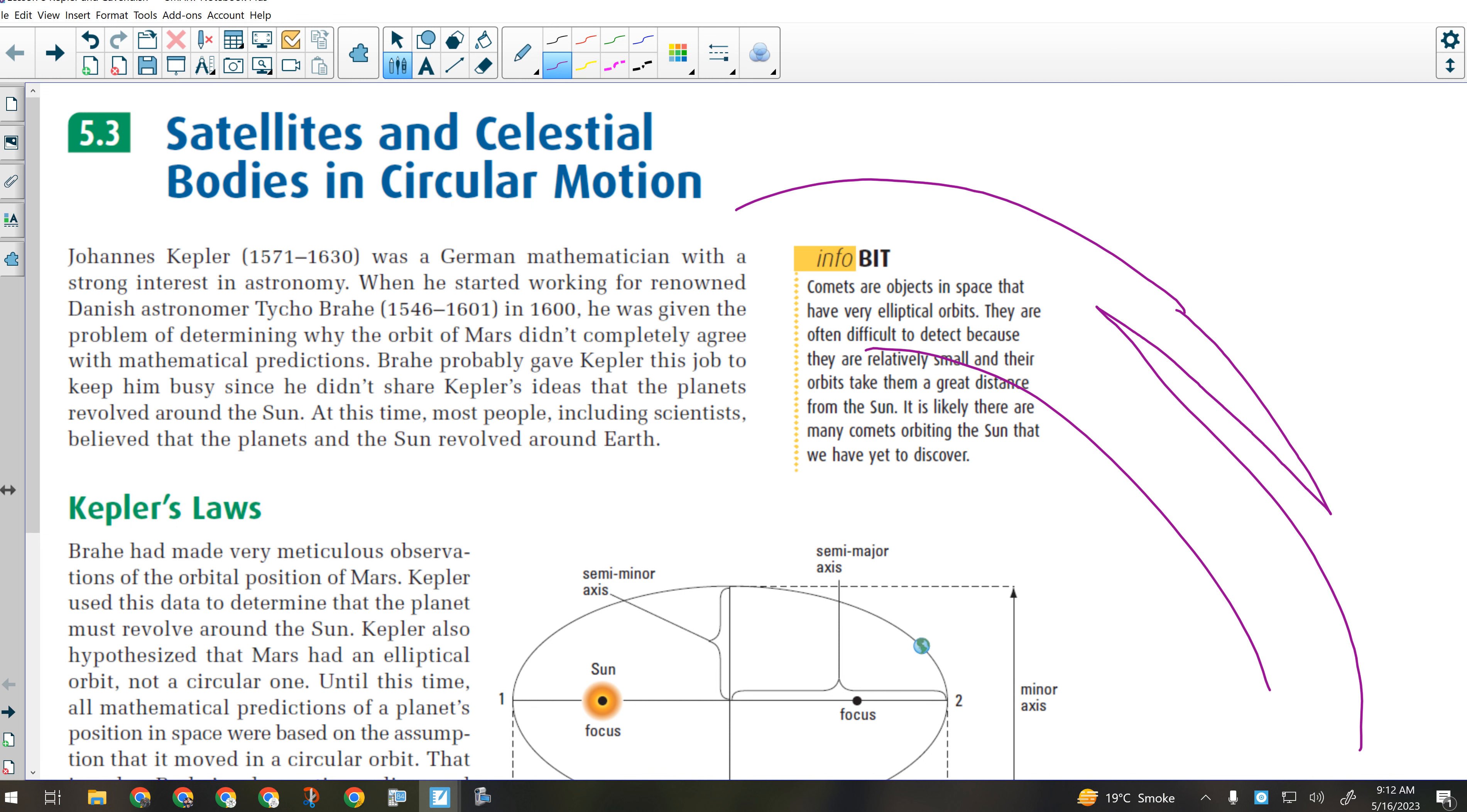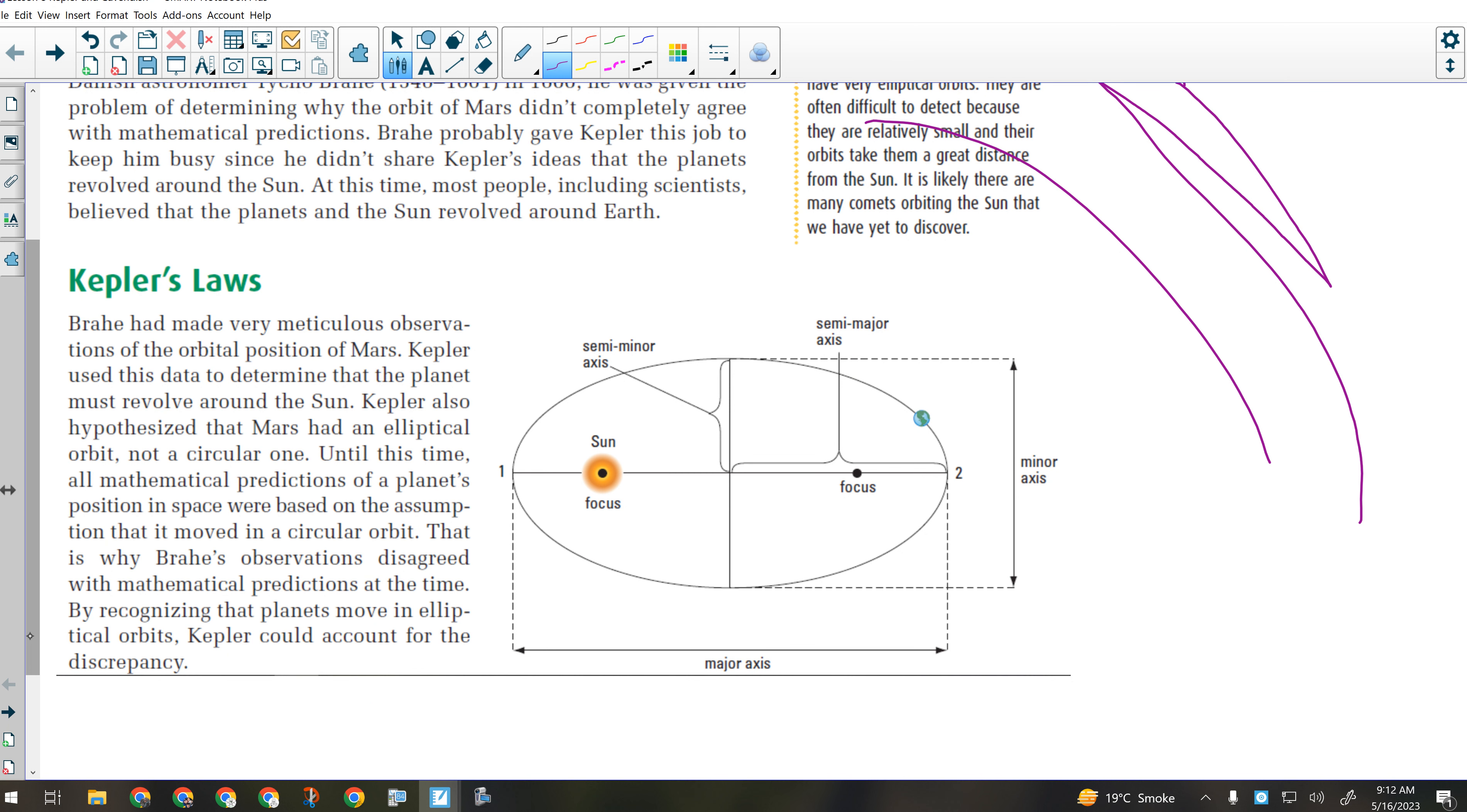So, Kepler uses Tycho Brahe's data, and he comes up with this idea. First thing is, he noticed, because Brahe's data was so incredible, that there were points in the orbits of all the planets where they appeared to move faster than at other points in their orbit. And the only reason they would appear to move faster would be if they actually were moving faster. So, he knew that when you whirled something in a circle, that the speed was constant. But if you changed the radius, the speed would change.